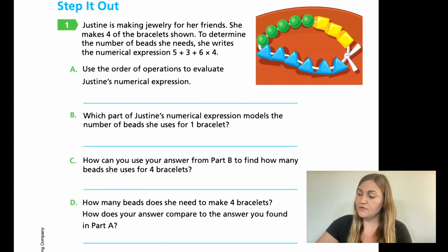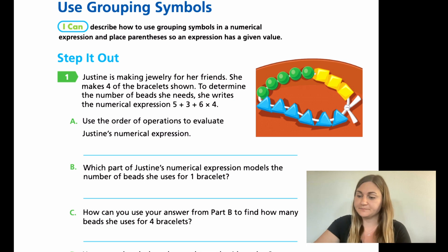Now moving on to page 87, it's in the step it out question number one. Justine is making jewelry for her friends. She makes four of the bracelets shown. To determine the number of beads she needs, she writes the numerical equation 5 plus 3 plus 6 times 4.